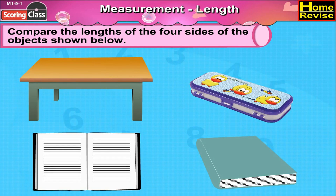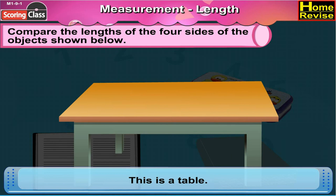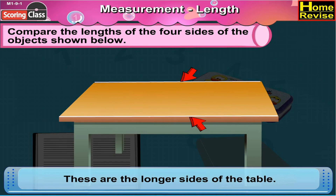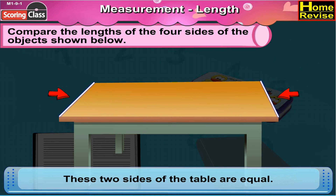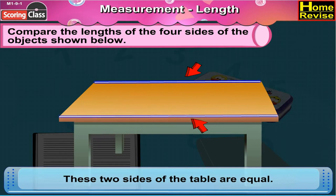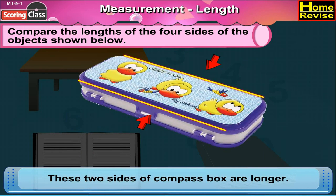Compare the length of the four sides of the object shown below. Now this is a table. These are the longest sides of the table and these are the shortest sides of the table. These two sides of the table are equal and these two sides of the table are equal. This is a compass box. These two sides of the compass box are longer.